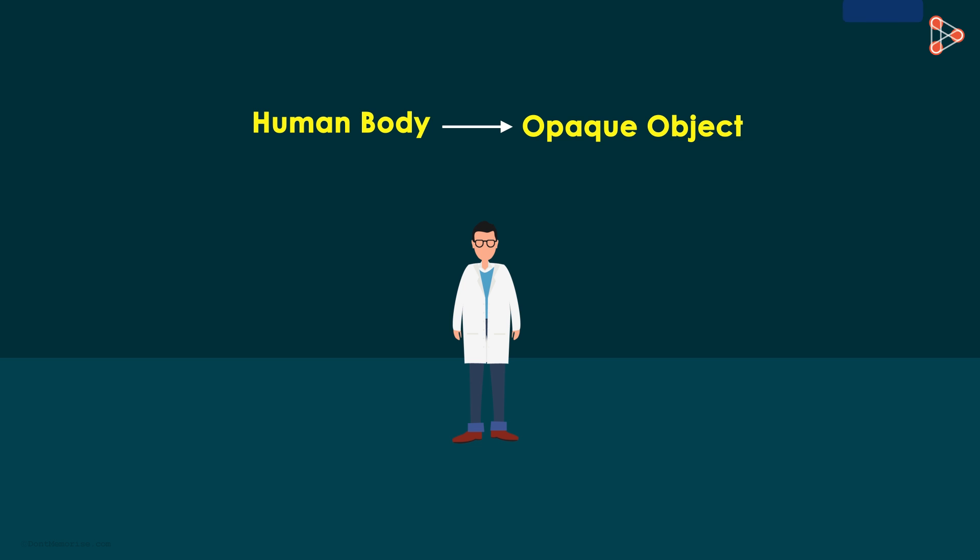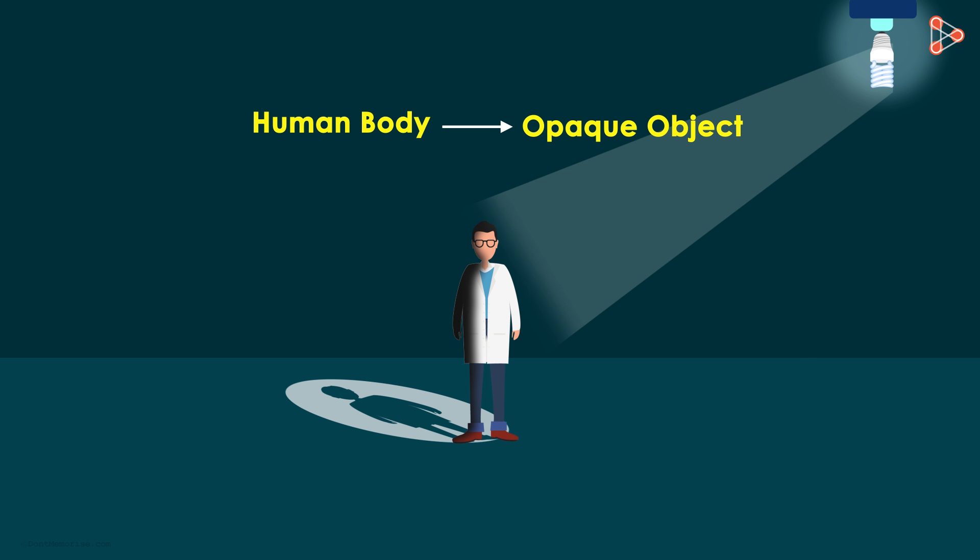What happens when light is obstructed by the human body? We see that the human body is obstructing light here. There is light in front of the human body but what do you see behind it? Yes, a shadow. This thing you see behind the body is called a shadow.